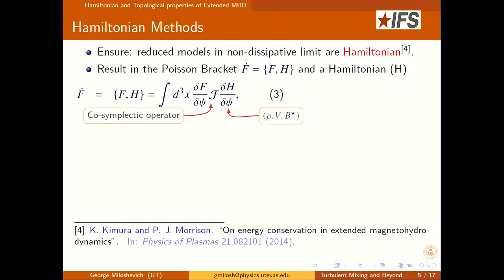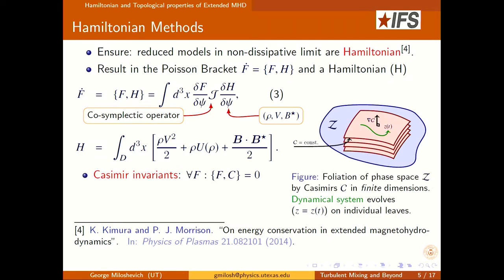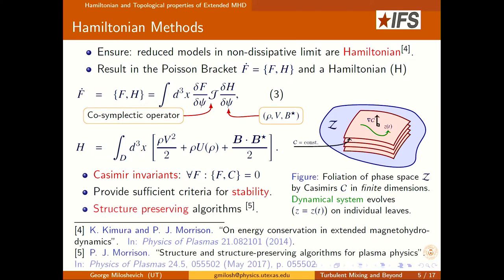What you work with is a Poisson bracket that gives you the time evolution of general functionals. This is the Poisson bracket; it depends on a variable psi which for extended MHD consists of the density, velocity, and B-star. This is the Hamiltonian for extended MHD, consisting of the kinetic, magnetic, and thermal parts. The nice thing is that this Poisson bracket allows you to find Casimir invariants, which are functionals that commute with any other functional. Commuting with the Hamiltonian gives the time derivative, which equals zero — so they are integrals of motion.